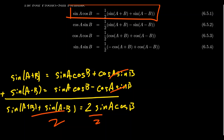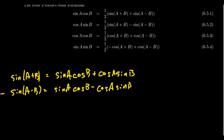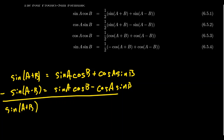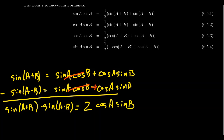Where do the other formulas come from? This time we take sine of (A+B) minus sine of (A−B). The left-hand side stays as sine of (A+B) minus sine of (A−B). On the right-hand side, the sine A cosine B terms cancel out, and because of the double negative they add up to give 2 cosine of A sine of B. Dividing both sides by 2 gives the identity: cosine of A times sine of B equals one-half times [sine of (A+B) minus sine of (A−B)].